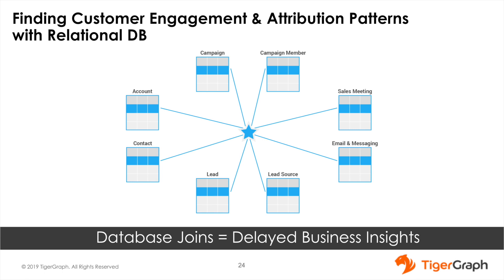Let's consider a popular use case for analyzing relationships in business-to-business enterprises: understanding how multiple stakeholders from an account are involved in an opportunity, and how their interaction with various marketing campaigns and sales meetings leads to driving revenue and profits. Traditional solutions built on relational databases store information in separate tables — one for account, another for contact, one for lead, another for campaigns and campaign members summarizing when each contact or lead joined the campaign, and one more table with sales meeting information.